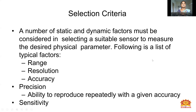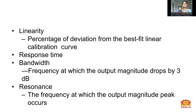The selection criteria of the resistive transducers: a number of static and dynamic factors must be considered in selecting a suitable sensor to measure the desired physical parameter. The following factors are: first, range; resolution; accuracy; precision — which is nothing but the ability to reproduce results effectively with a given accuracy, meaning we take 10 or 12 repeatability readings in a lab experiment; next, sensitivity; and linearity — which is the percentage of deviation from the best fit linear calibration curve.